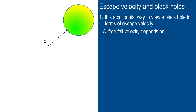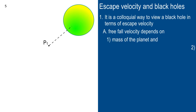Escape velocity is the colloquial way to describe a black hole — it's what Sir Isaac Newton would have thought about. If something is so massive and dense that even light itself cannot escape, that's not a bad definition of a black hole. It's not the best — it's kind of a dynamical definition instead of geometric. But freefall velocity in general depends on the mass of the planet or star and how high up it is when you drop it.